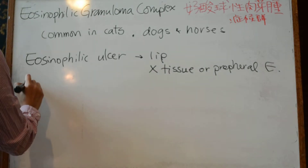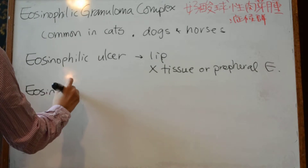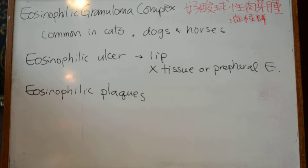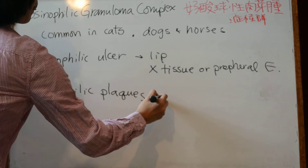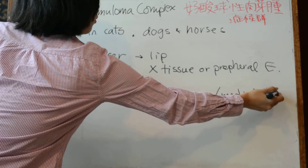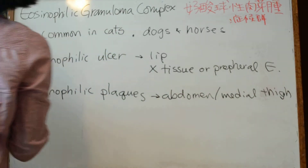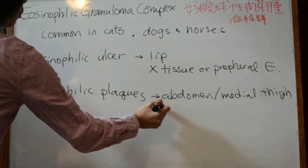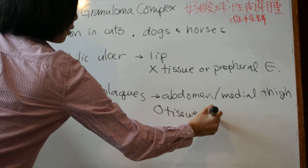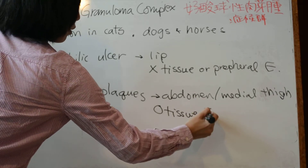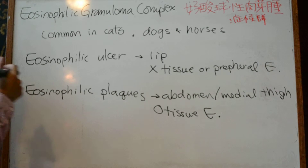Eosinophilic plaques: tissue eosinophilia is the rule, and peripheral eosinophilia is common. These lesions are very pruritic.